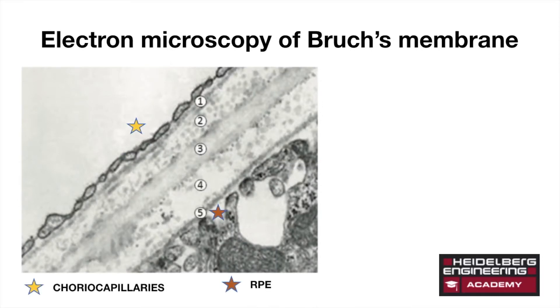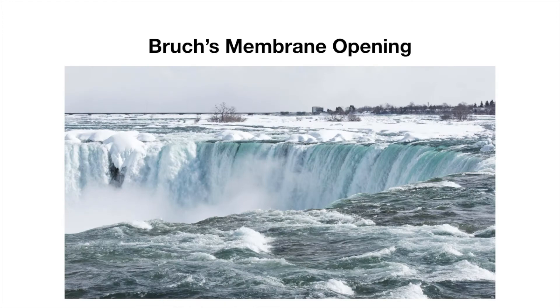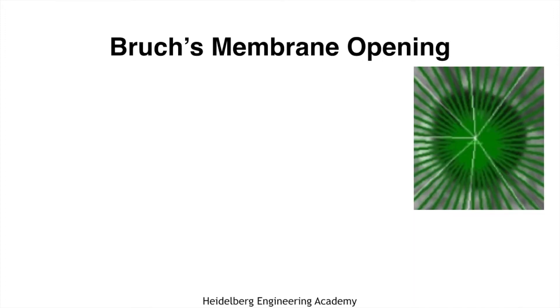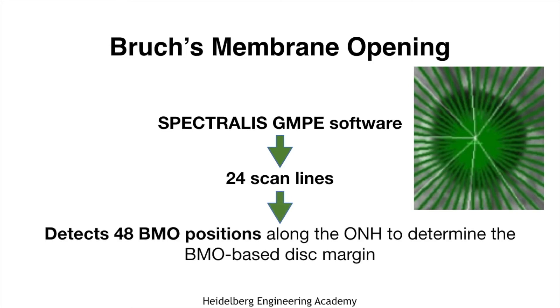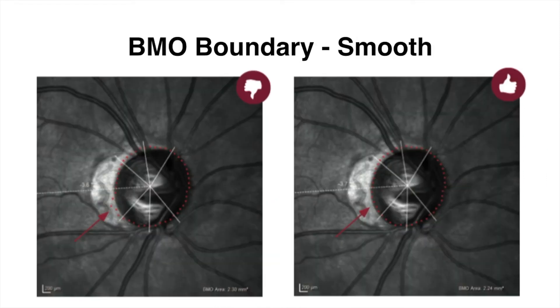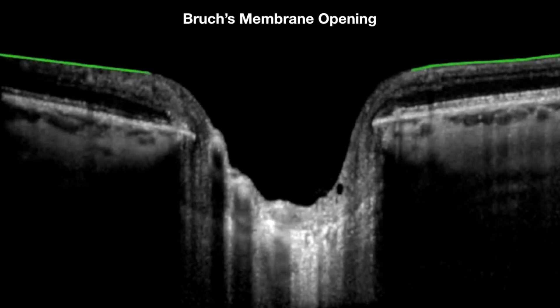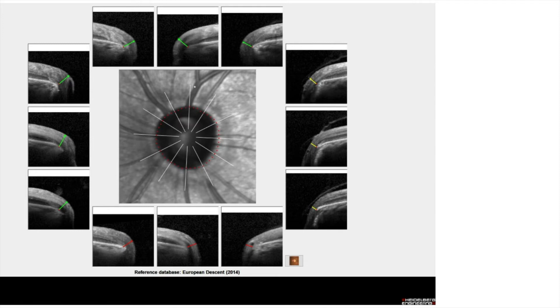Bruch's membrane opening: imagine the retinal nerve fibre layer projecting into the optic disc like water falling into a waterfall — this helps in understanding the concept better. With the Spectralis Glaucoma Module Premium Edition software, there are 24 scanned lines, so a total of 48 BMO positions are detected along the optic nerve head to determine the BMO-based disc margin. The BMO-based disc margin should be smooth; irregular margins indicate an erroneously performed test. The green line segments the internal limiting membrane, and the red line segments Bruch's membrane, with the BMO depicted as a red dot.